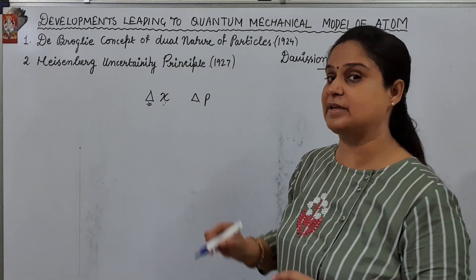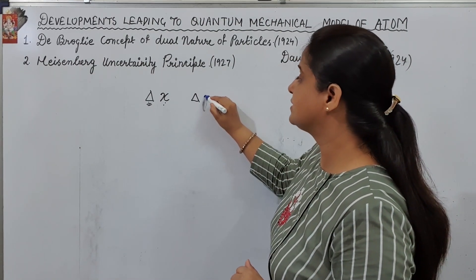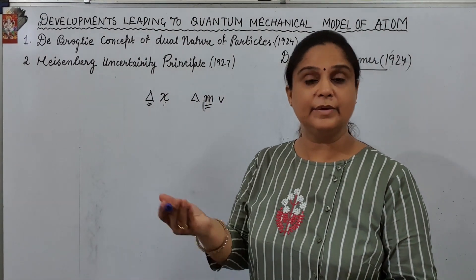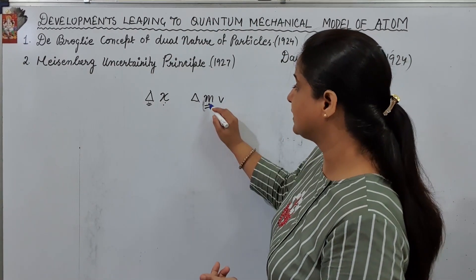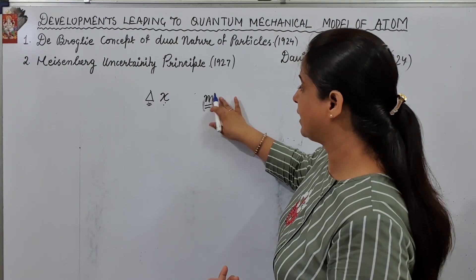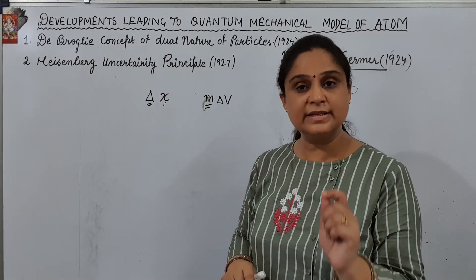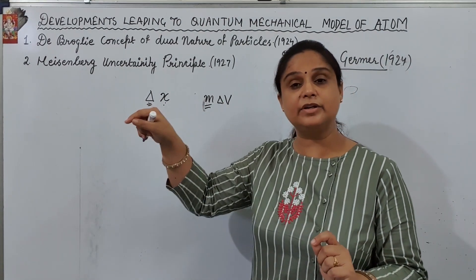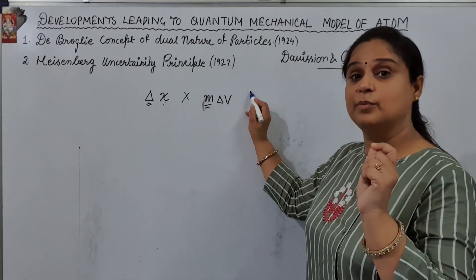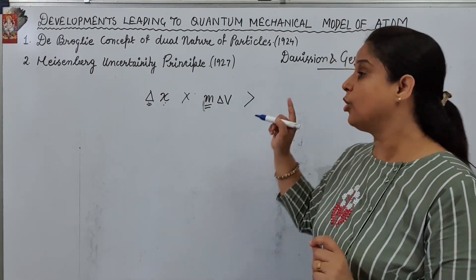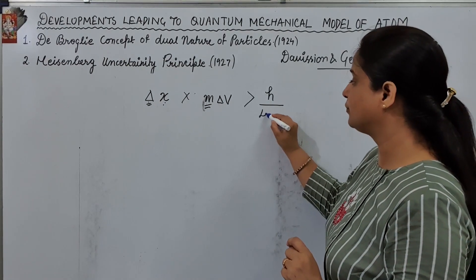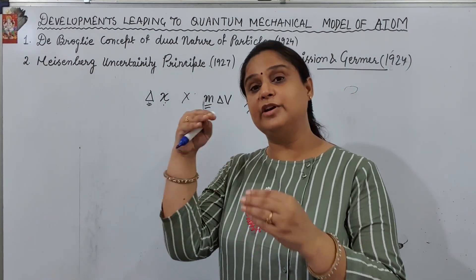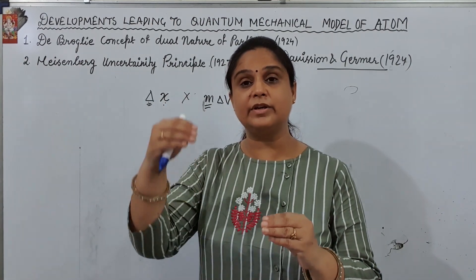The momentum of the particle involves delta m into v. But since delta m is not changing here because we are talking about the electron, we can write m into delta v. So the uncertainty in position and uncertainty in velocity at that particular position will be either greater than or equal to h upon 4π. You cannot assess both the position and the velocity of that particle at that particular instant.